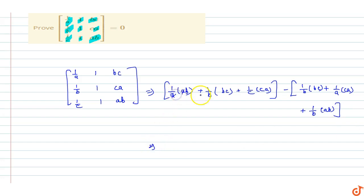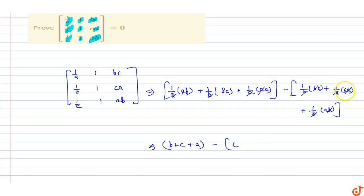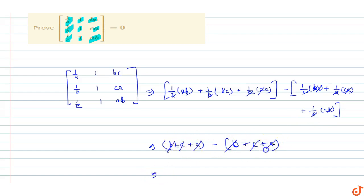Now cancelling terms: a cancels out, b cancels out, c cancels out, giving us b plus c plus a. Then again b cancels, a cancels, b cancels, giving minus c plus... Similarly, c cancels and b cancels, so we get plus b plus c plus a, minus b plus c plus a.